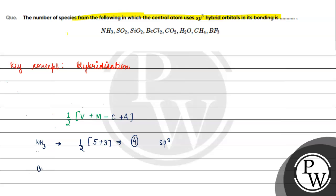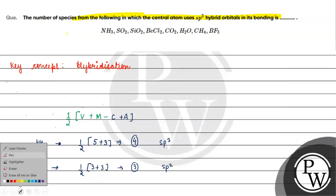Next, BF3. Boron is the central atom with 3 valence electrons. Fluorine is the monovalent species — there are 3 of them. So half of (3 + 3) equals half of 6, which is 3. That gives sp2 hybridization.